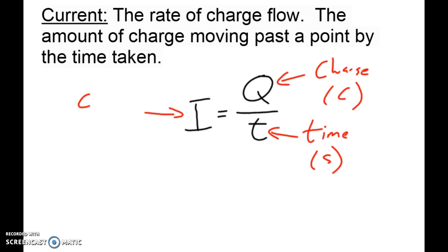So i represents current. And current would be coulombs per second. But none of us ever call it that. What we call it is A, for amps.